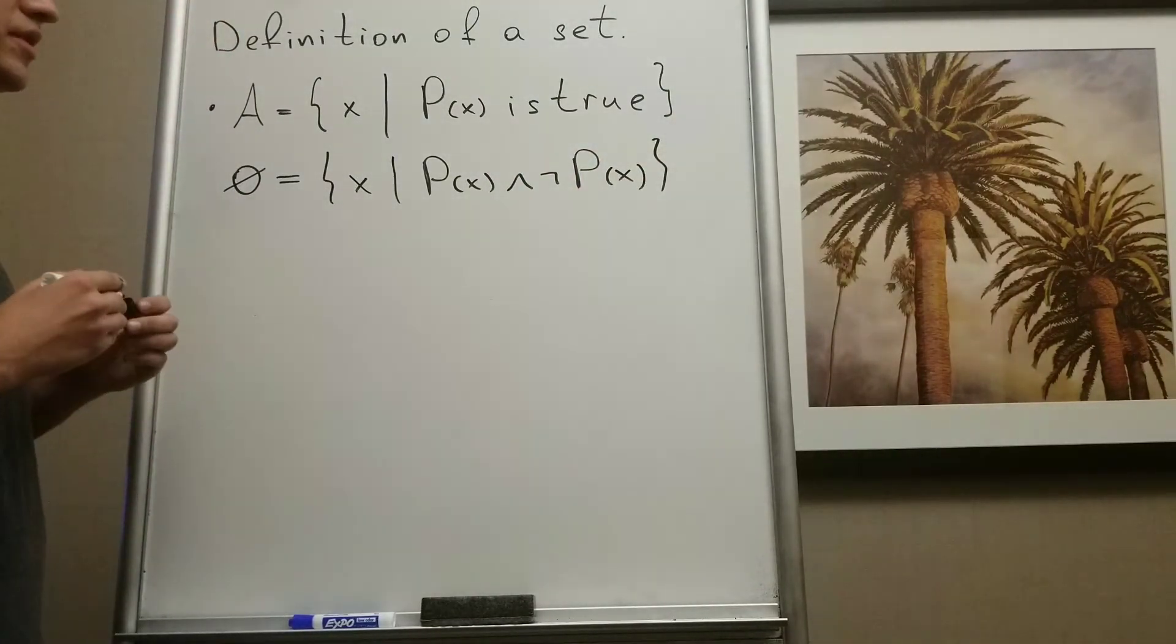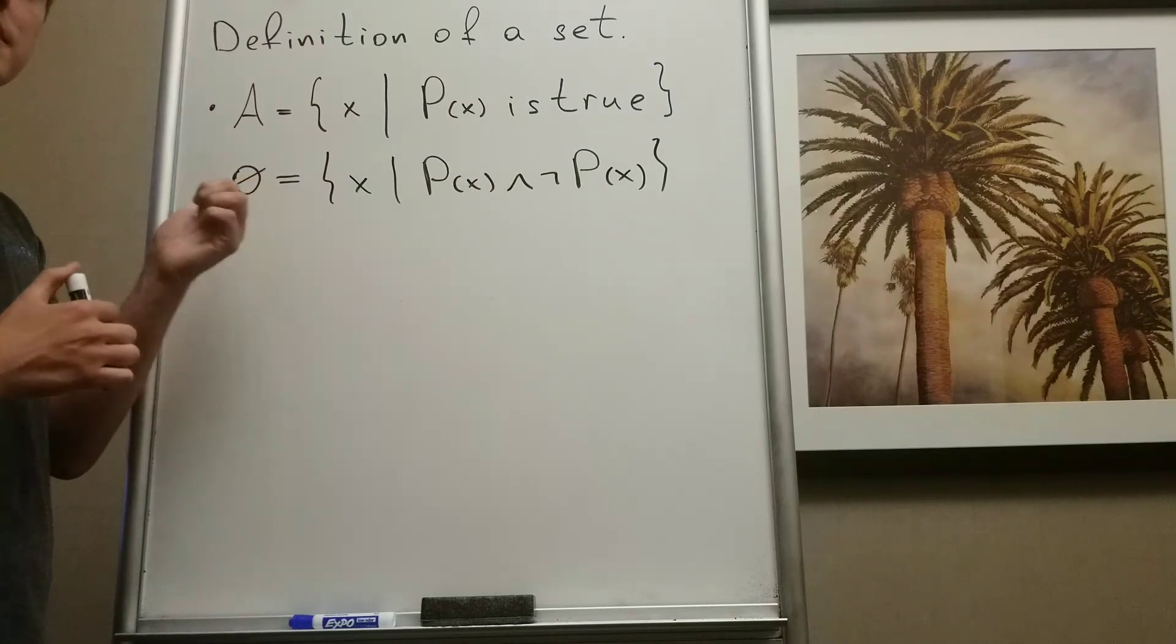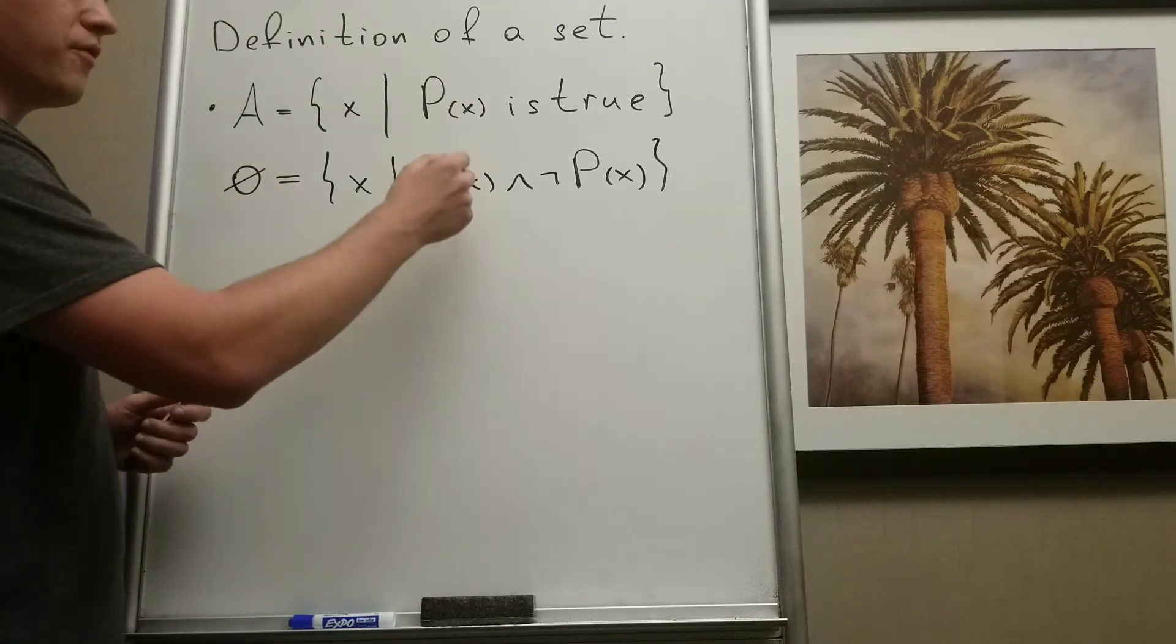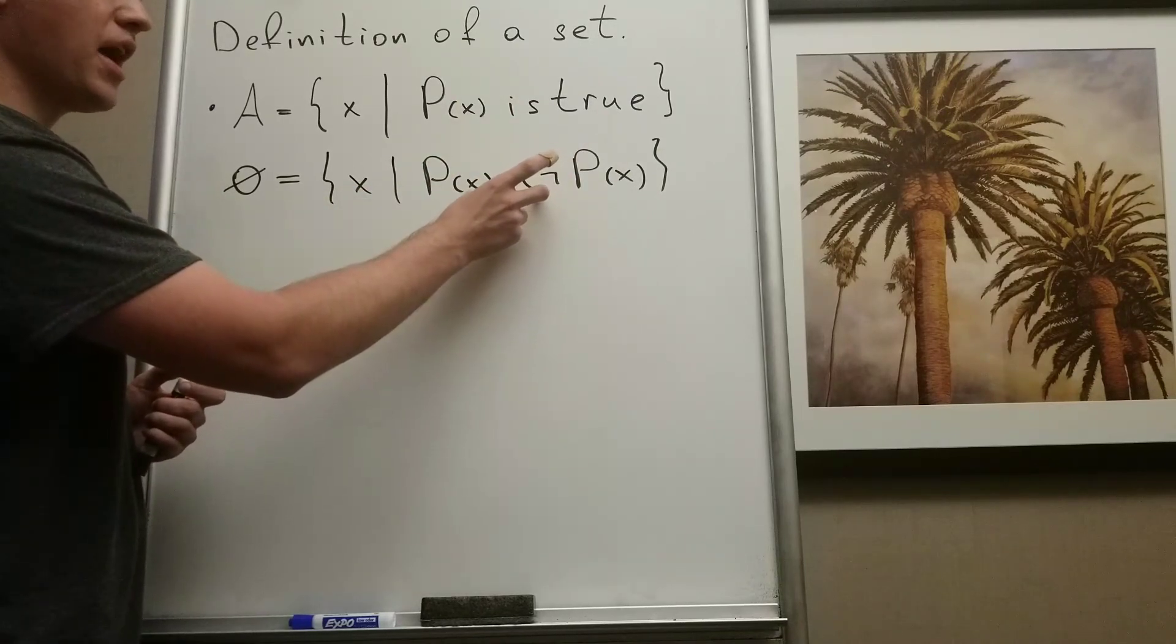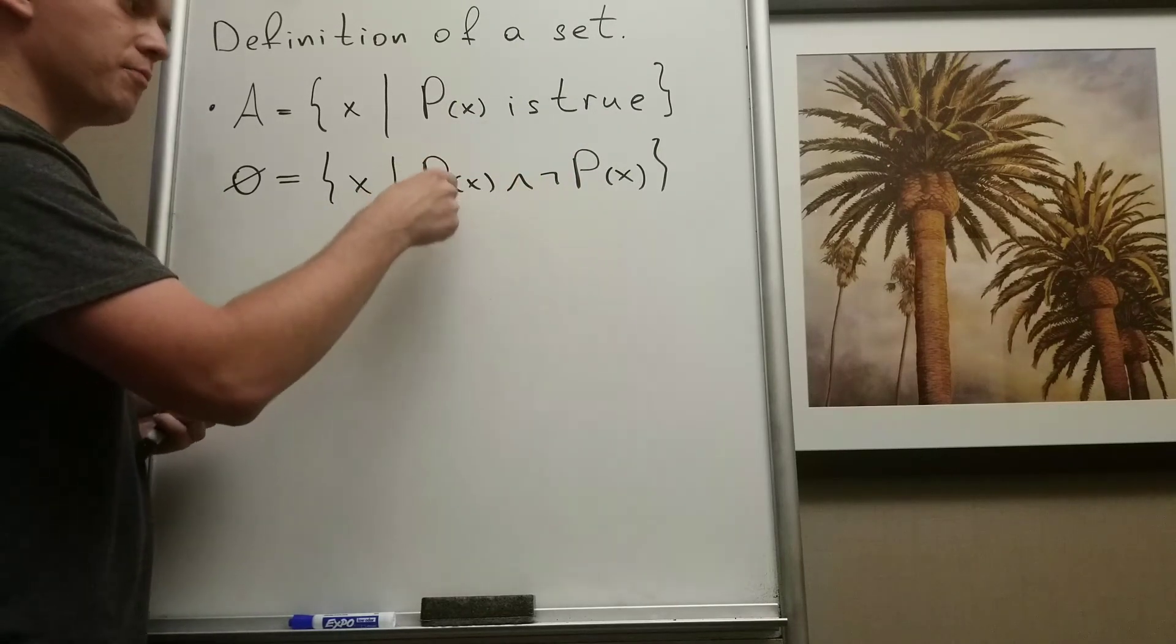What does it mean? It means there is no element in this empty set. Why? Because if P of X is going to be true, negation of P of X is going to be false.